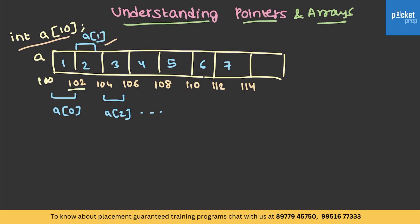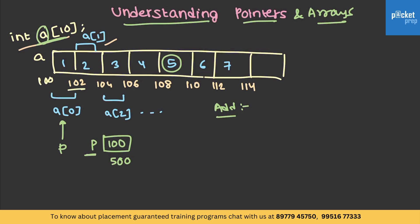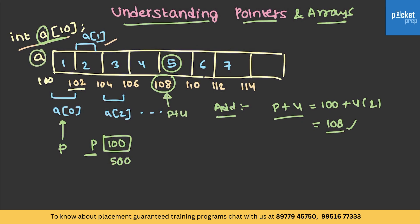To understand pointers and arrays together, let's take the previous example where P is pointing to the first location — P has address 100 at memory location 500. Let's target the element at index 4. Since P holds its address, I can reach this position by adding P plus 4, which is 100 plus 4 times 2 = 108. With the array name, A plus 4 is also a scaled operation and also points to 108. So both P plus 4 and A plus 4 point to the same location.